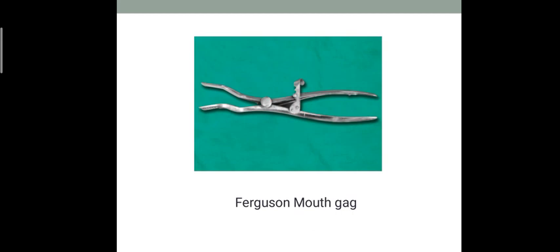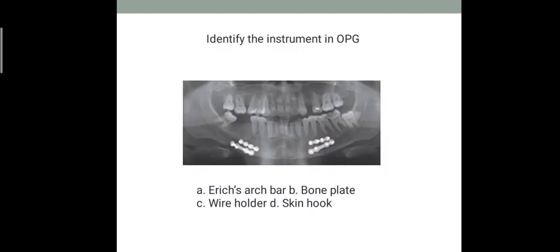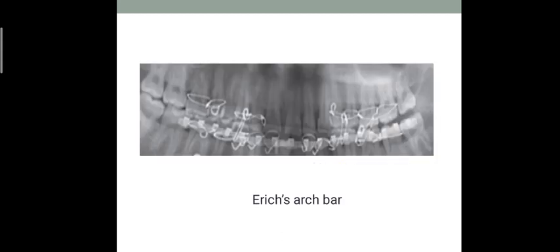Identify the technique or instrument present in your OPG. Is it Erich's arch bar, bone plate, wire holder, or skin hook? In our last image discussion video we covered bone plates, different types like monocortical screws and bicortical screws. This indicates Erich arch bar with interdental wiring. Know the difference between bone plates and arch bars. The live chat box is open - this is a YouTube live premiere, so if you have any doubts you can ask me.